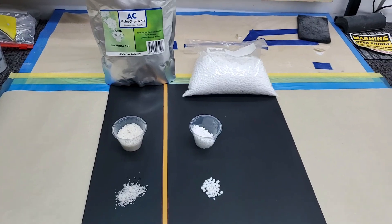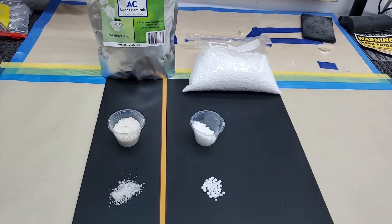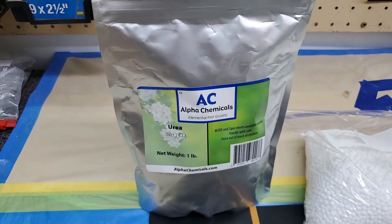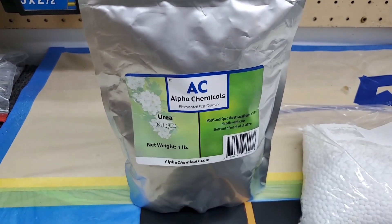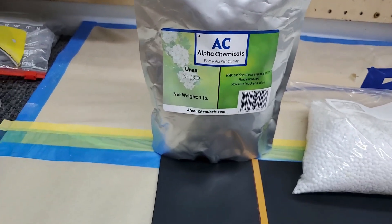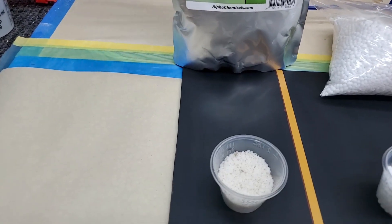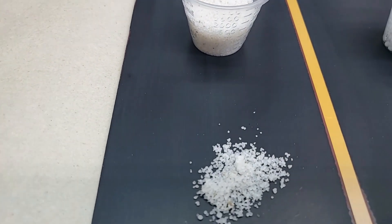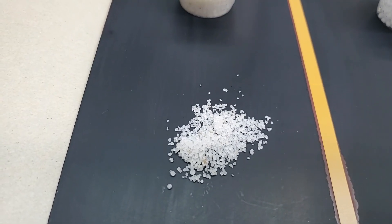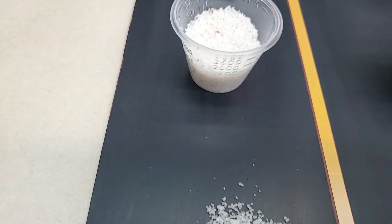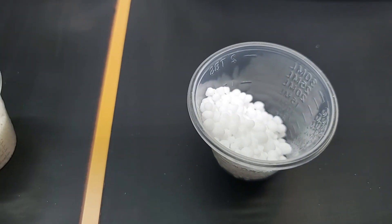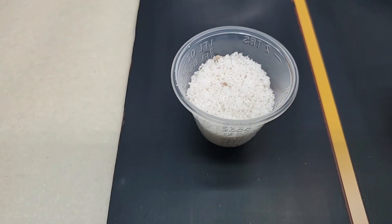So here are the two ureas that we have. The first one I bought was the Alpha Chemicals urea. I got that off of Amazon. They call it a fine prill, but it looks more like a granulated urea to me.